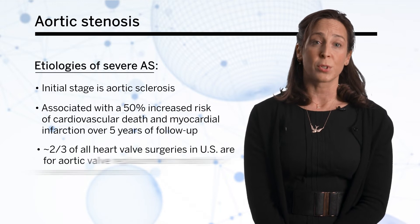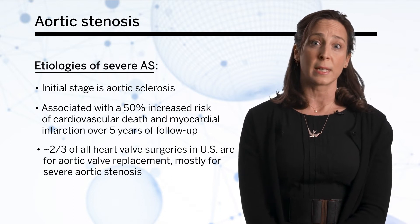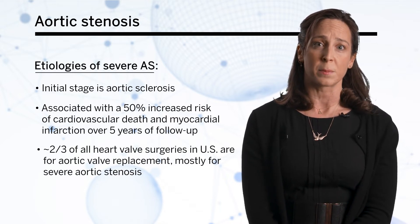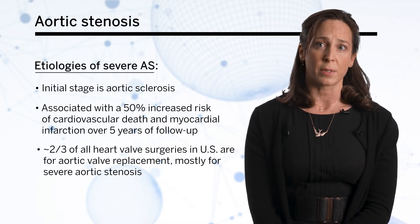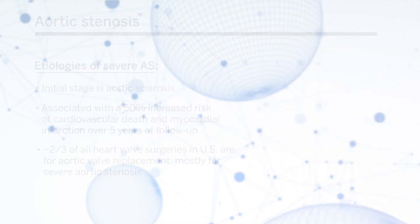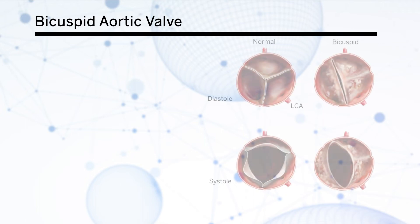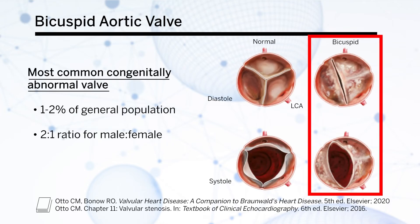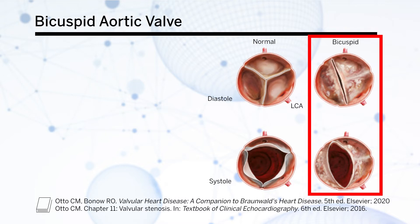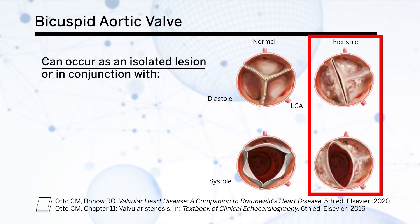About two-thirds of heart valve surgeries in the United States are for aortic valve replacement, mostly done for severe aortic stenosis. Bicuspid aortic valve is the most common congenitally abnormal valve, constituting about 1 to 2% of the general population with a 2 to 1 male to female ratio. It can occur as an isolated lesion or associated with aortopathy, presenting with a dilated aortic root or ascending aorta.